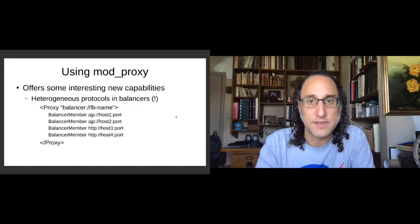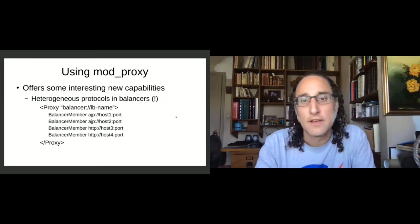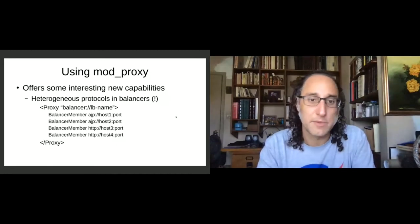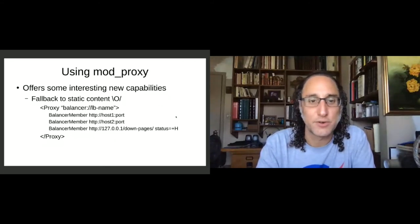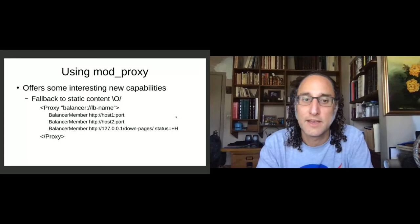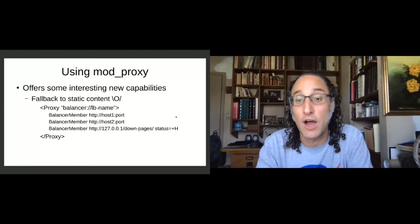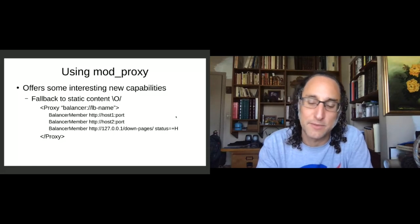When using mod_proxy instead of mod_jk there are some interesting new capabilities. For example, you can use different protocols for each member in the balancer — if you want some using AJP and some using HTTP, go for it. You can even have fallback to static content. I used that trick when setting up a proxy for a content management system I didn't trust to respond quickly all the time — we put a hot spare configured as a balancer member that performs a loopback request and gives nice error messages, or even serves a static snapshot.